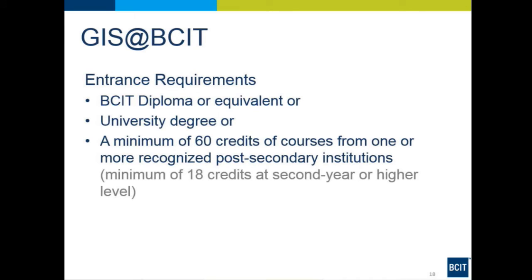Looking at entrance requirements — all three programs have identical requirements. You could have a BCIT diploma in geomatics, natural resource, or mining, or an equivalent from another technical college. Many people come with a university degree from UBC or SFU — they come here for the hands-on practical experience. Or if you have two years of university with a minimum of 18 credits at second year or higher, you can also get into any of our three programs.